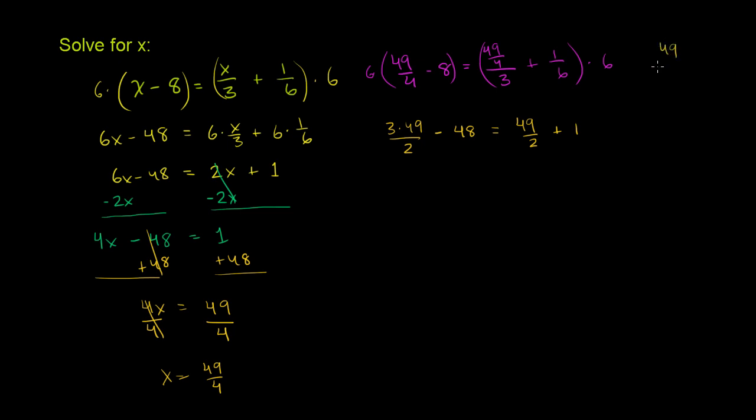So 3 times 49, 49 times 3, you could think about it. It's going to be 3 less than 50 times 3, so it's 147. But let's just multiply it out. 9 times 3 is 27. 4 times 3 is 12, plus 2 is 14.